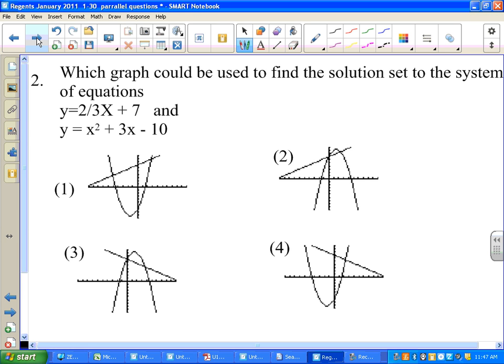Which graph could be used to find the solution set? Solution set just means answer to the systems of equations. Systems of equations just means that we have more than one equation. The first equation that we look at, we notice this is a line. The second one, we see that it's a parabola. How do I know it's a line? Because the exponent is a one. How do I know it's a parabola? Because the highest exponent is a two. So that doesn't help us because all four choices are lines and parabolas.